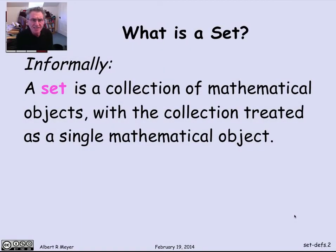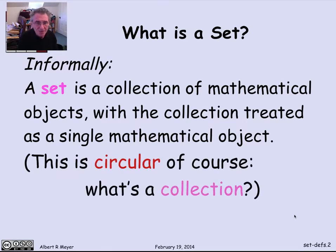So informally, a set is a collection of mathematical objects. And the idea is that you treat the collection of objects as one new object. That's a working definition, but of course it's circular. This is not math yet, because I haven't defined what a collection is. And a collection is no clearer or easier to define than a set is.